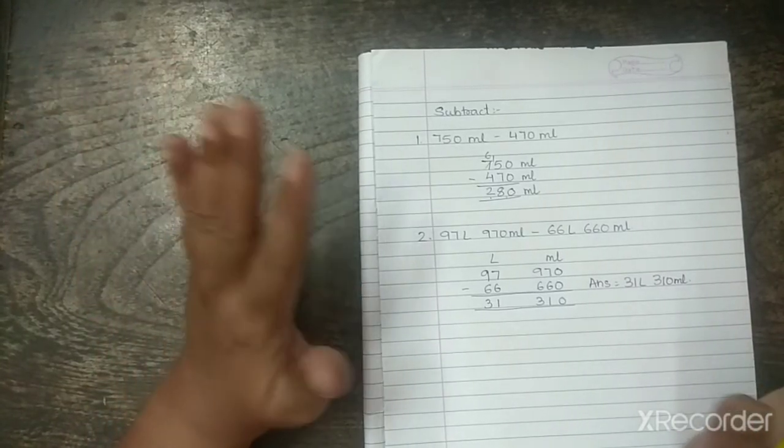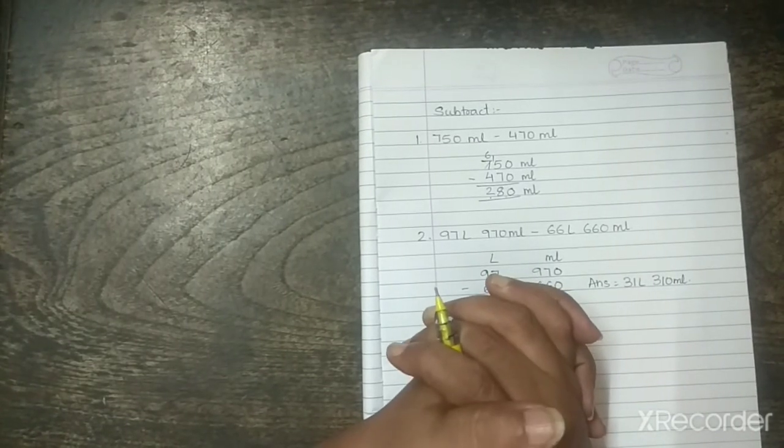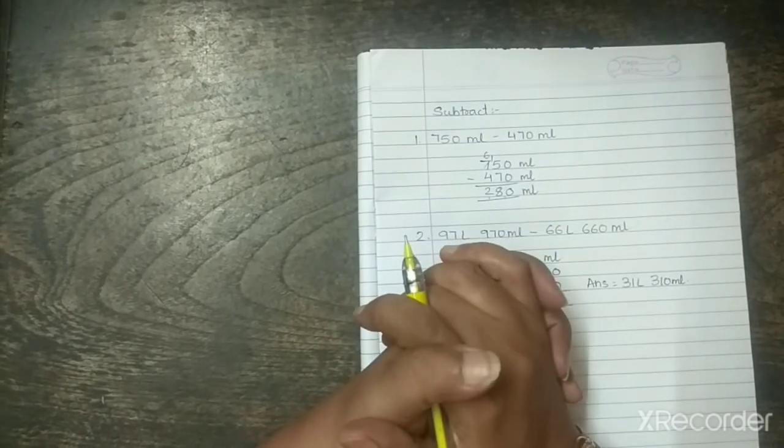So, this is the simple addition and subtraction and the conversion that you learned. Alright? Next, we will be doing some problem sums.